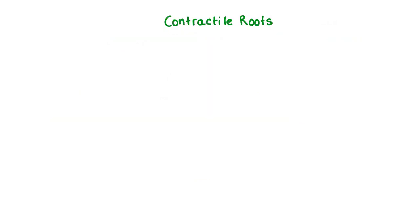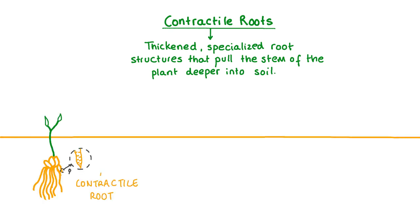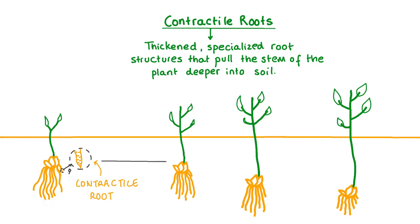Some plants like corms, bulbs or rosettes have specialized roots called contractile roots. Contractile roots are thickened root structures that are capable of shrinking under harsh environmental conditions like seasonal drought. As the stem of the plant grows upwards, the shrinking of these roots exerts a strong downward pull on the stem, which helps position the plant deeper in the soil. This helps to protect the plant from damaging light and heat in drought conditions.